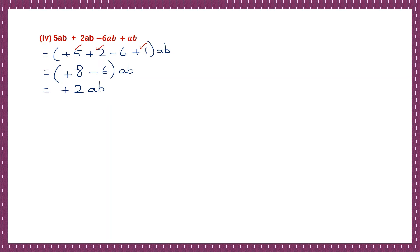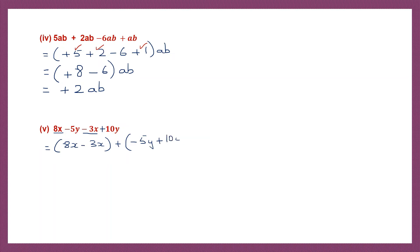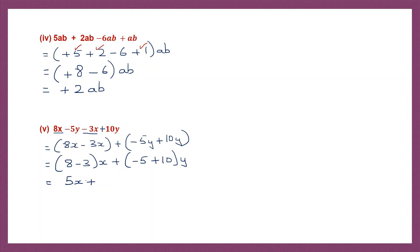Question 5: here we have 8x, 5y, minus 3x, and plus 10y. Let's take the x terms separately and group them: 8x minus 3x, and then y terms separately: minus 5y plus 10y. So this is 8 minus 3x plus minus 5 plus 10y. 8 minus 3 is 5x. For the y terms, signs are different — put the sign of the bigger number and subtract: 10 minus 5 is 5, so 5y. Our final answer is 5x plus 5y. We cannot add these together because they are unlike terms.